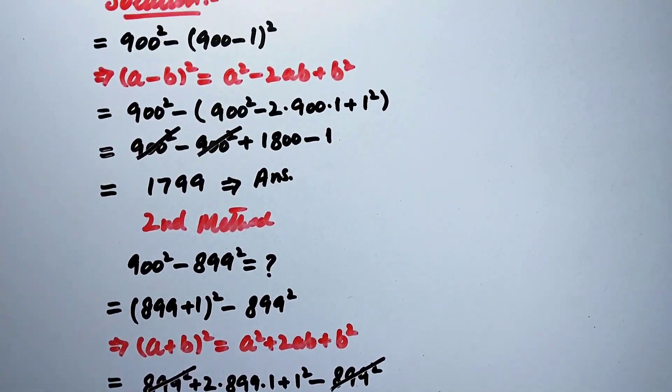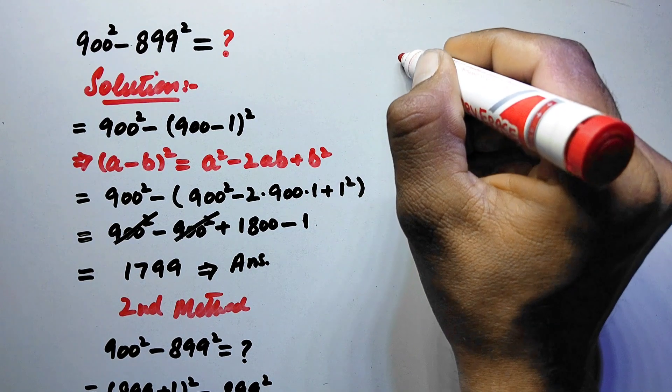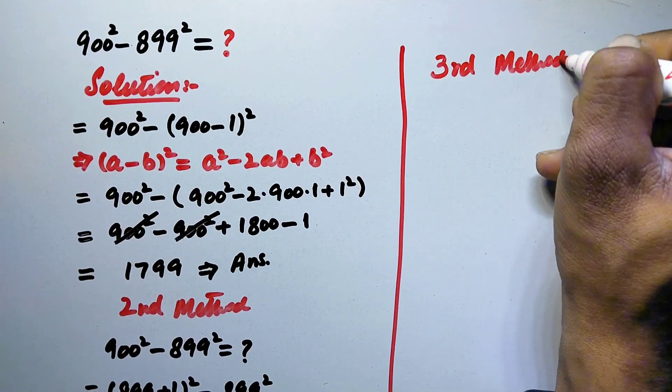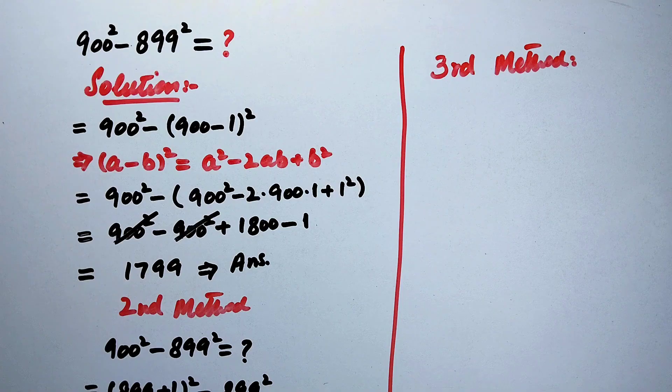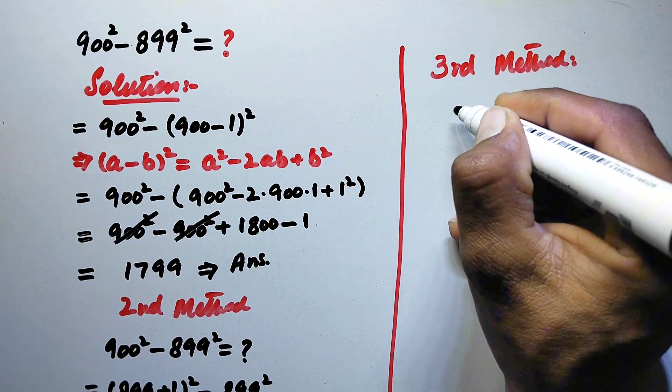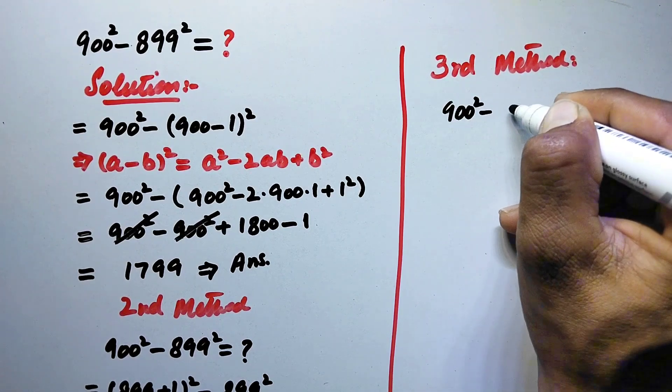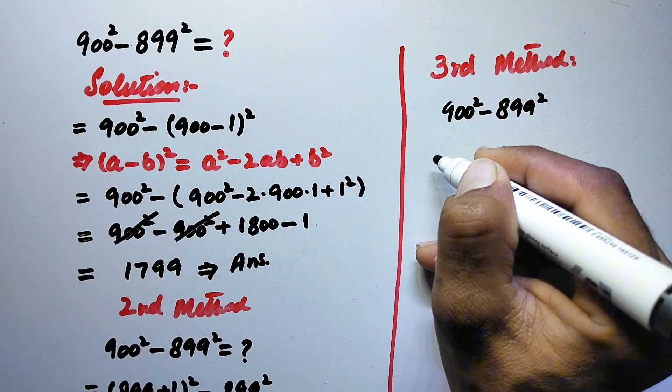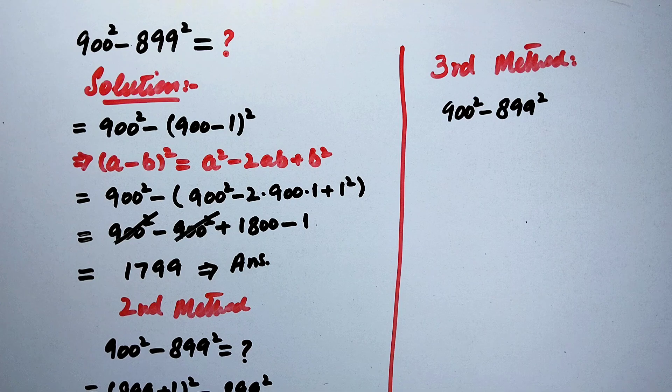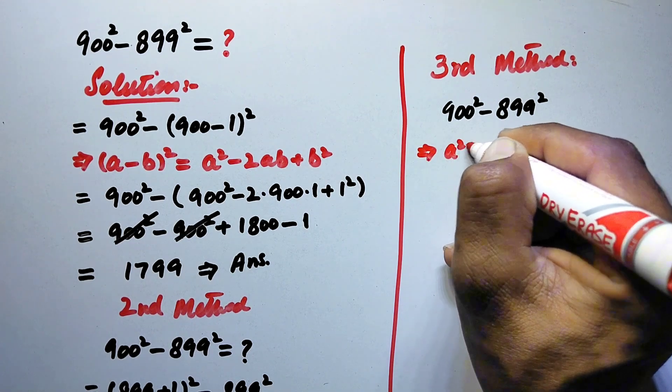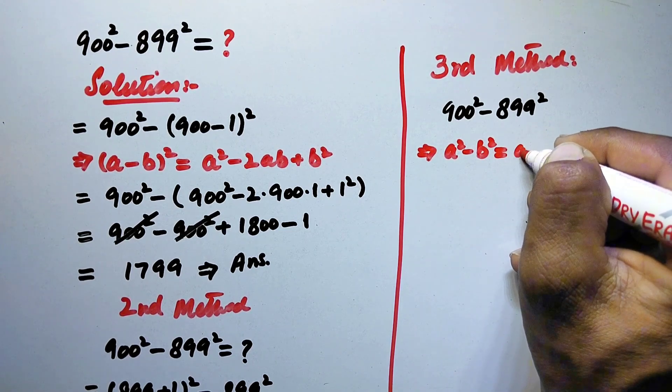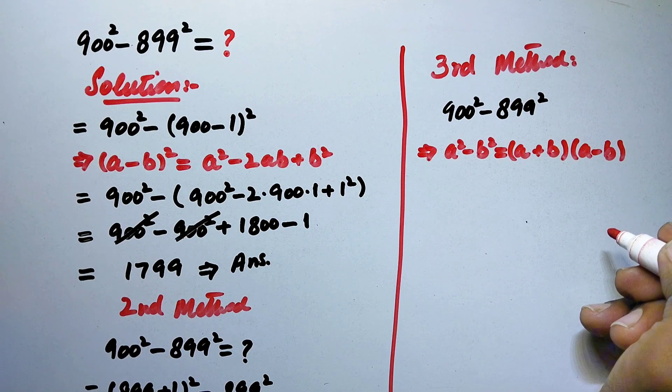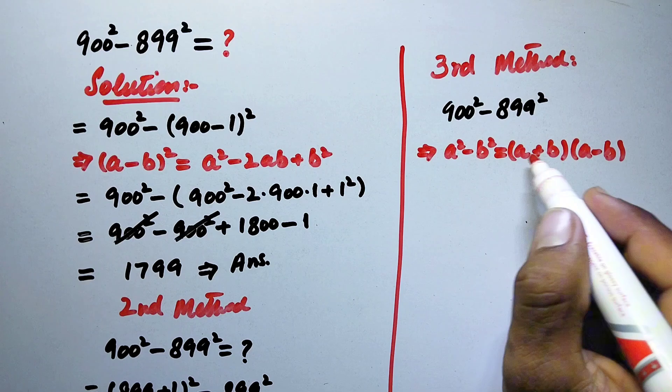Now we will solve it by another third method. So here we will write our original problem: 900² - 899². Now even from the first step we can apply an algebraic identity, that is a² - b² = (a + b)(a - b). So we can express this term in the form of this formula.